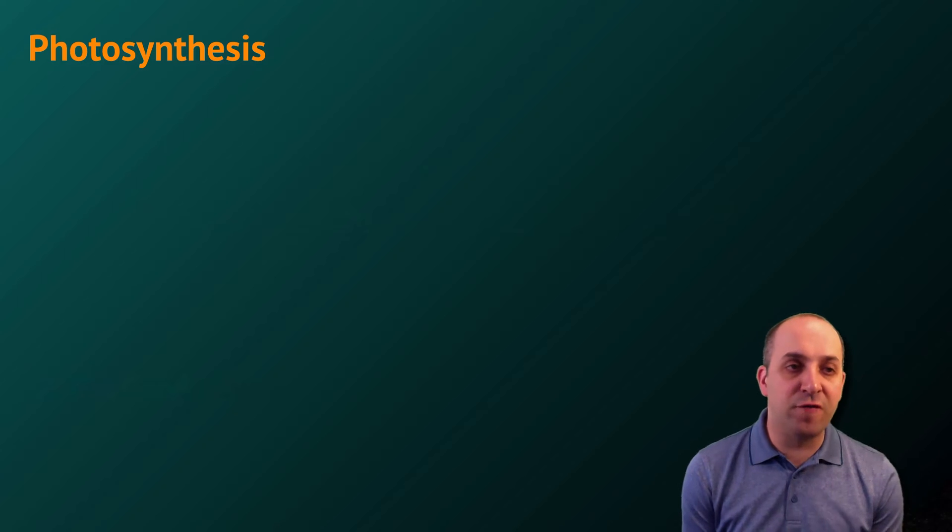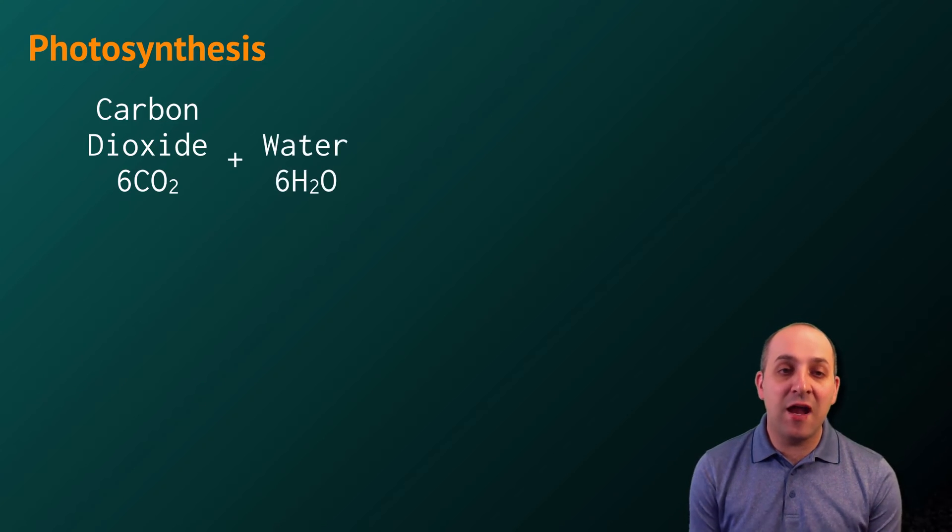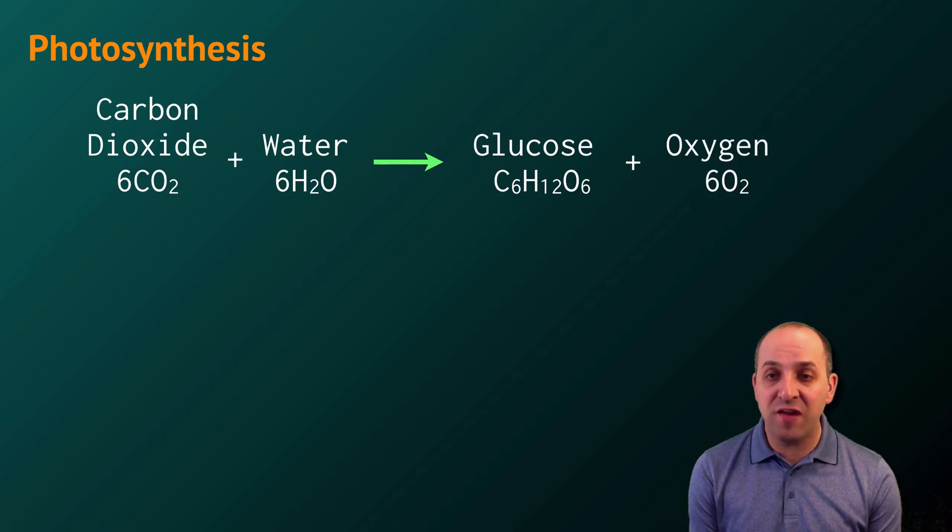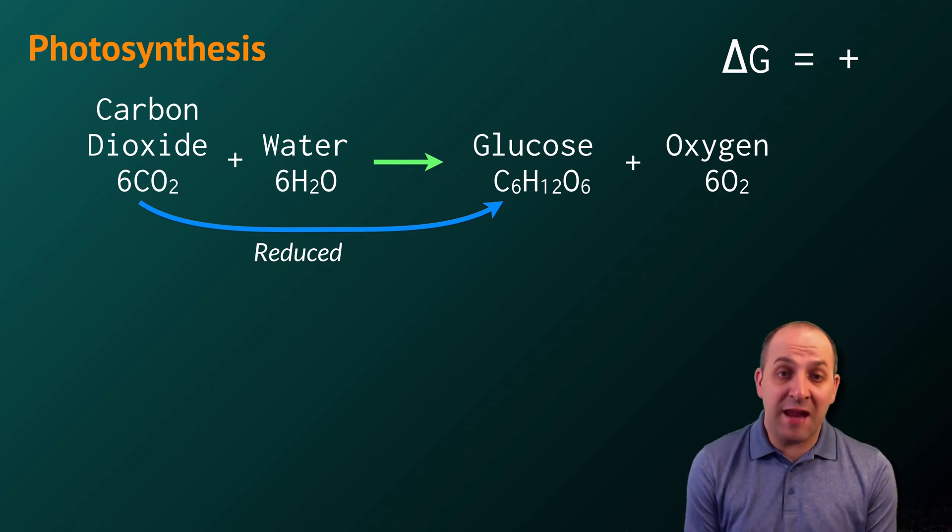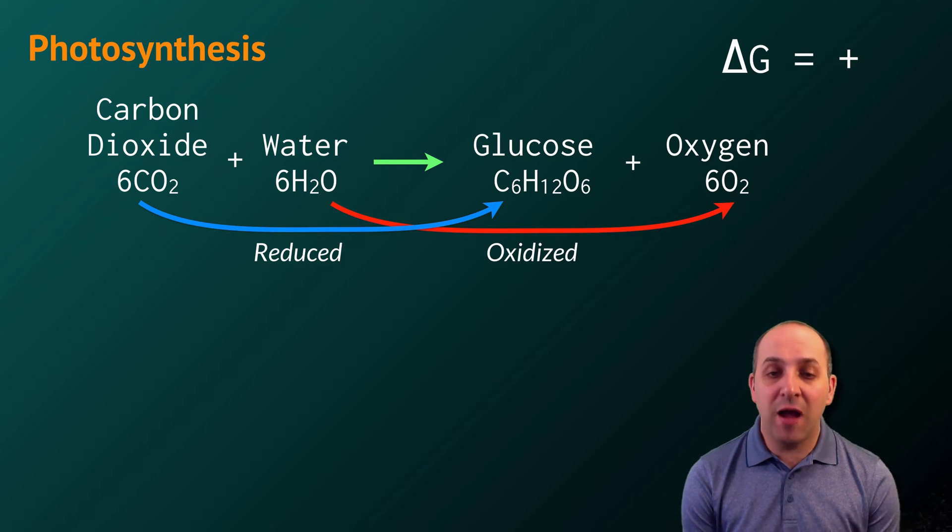Let's begin with the summary equation for photosynthesis. Carbon dioxide and water produce glucose and oxygen. This is an endergonic reaction. The carbon in carbon dioxide is going to be reduced and gain electrons into glucose, and the oxygen in water is going to be oxidized, lose electrons, and form oxygen gas.